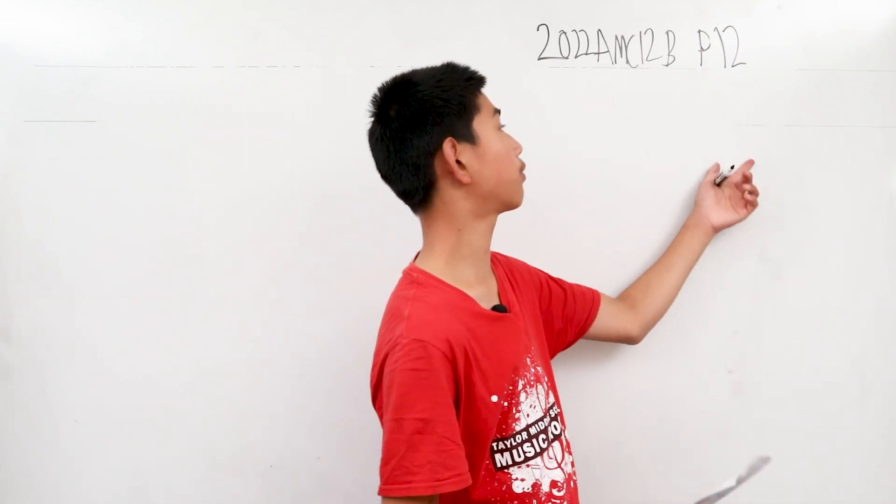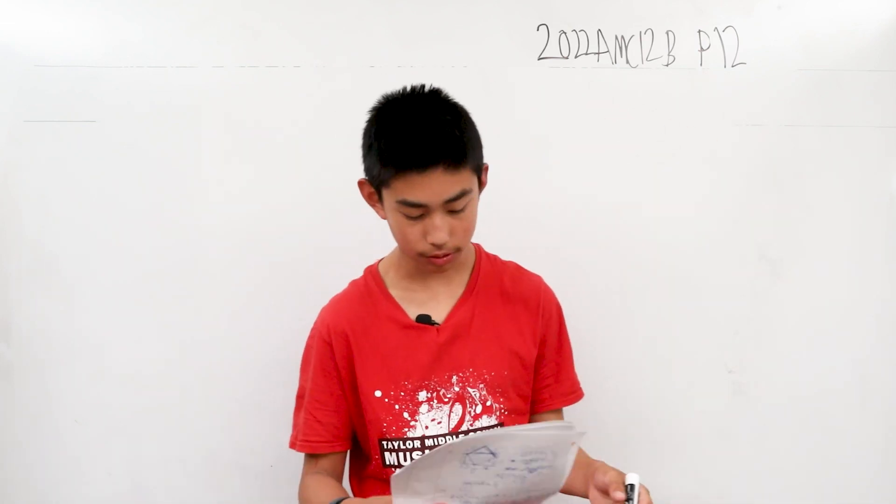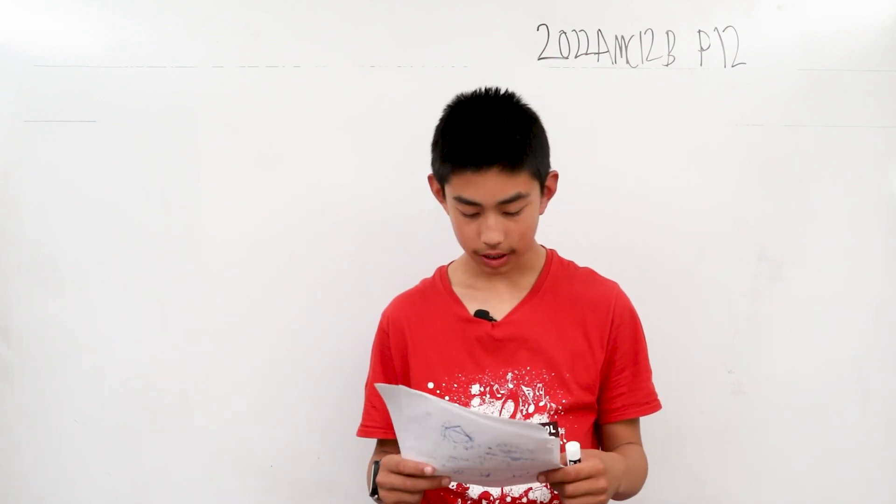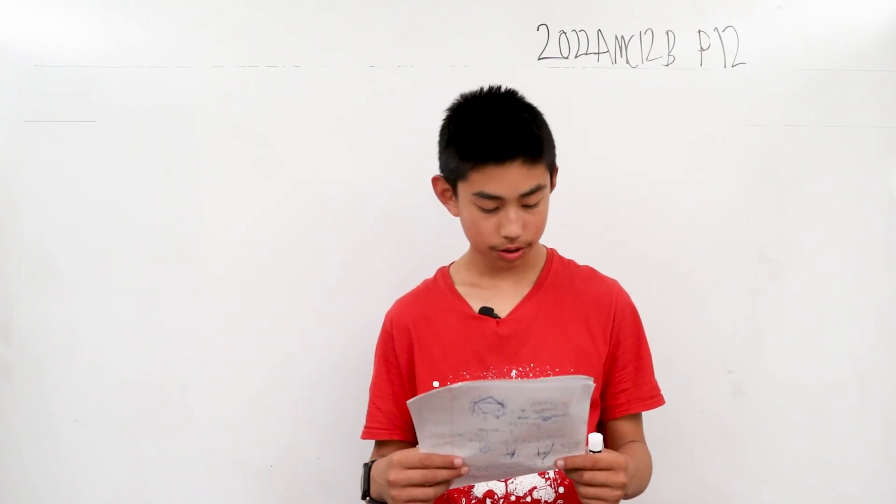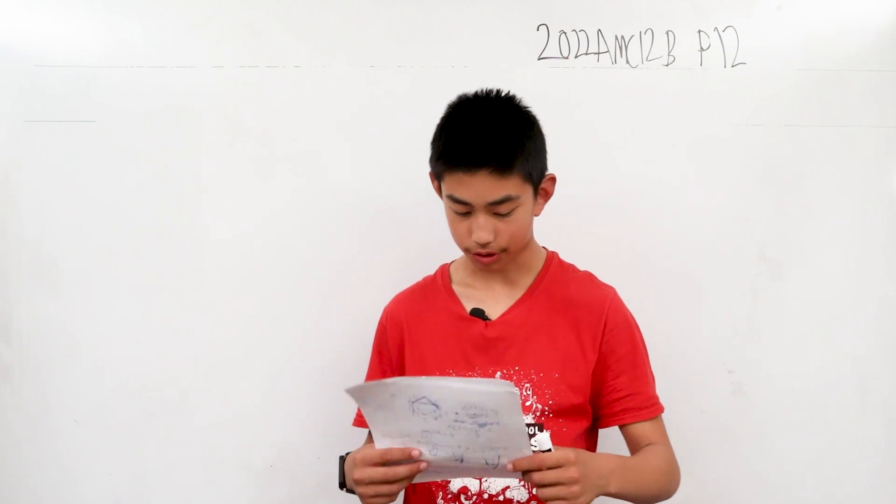We're solving problem 12 from the AMC-12B from 2022. Kayla rolls four fair six-sided dice. What is the probability that at least one of the numbers Kayla rolls is greater than four and at least two of the numbers she rolls is greater than two?